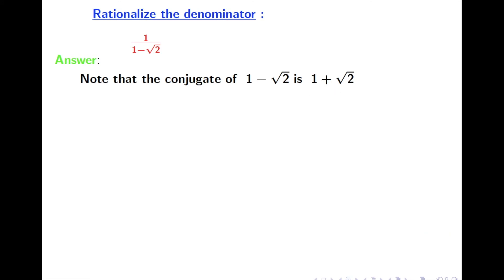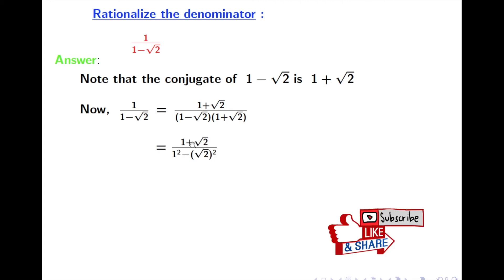So let's multiply. And we get 1 plus root 2 by 1 minus root 2 times 1 plus root 2. That means we get 1 plus root 2 in the numerator, and in the denominator we have 1 square minus root 2 whole square.